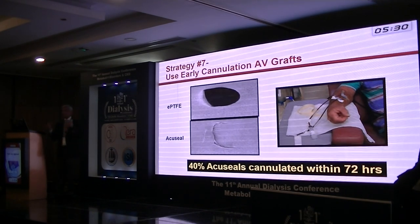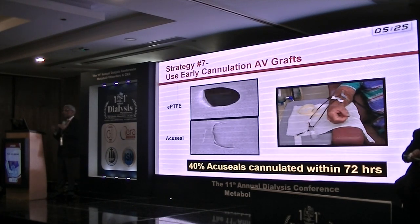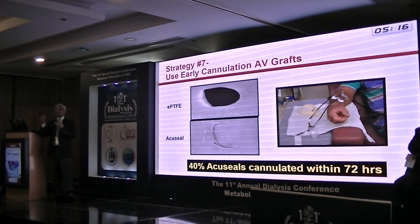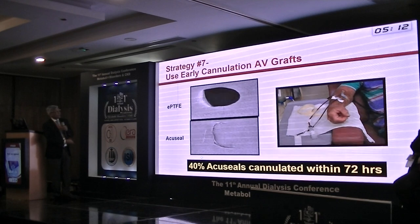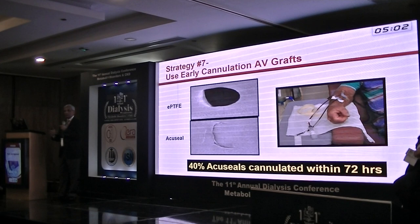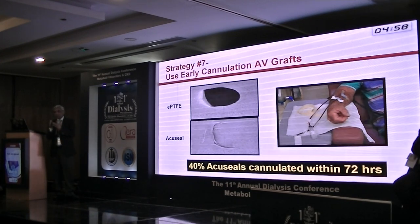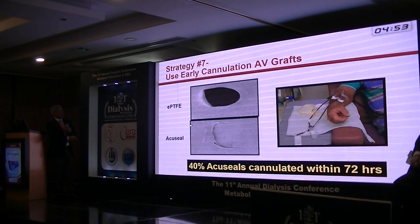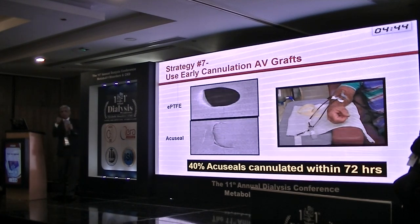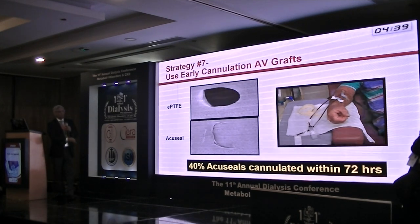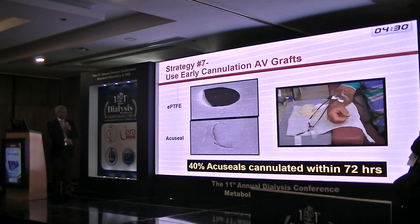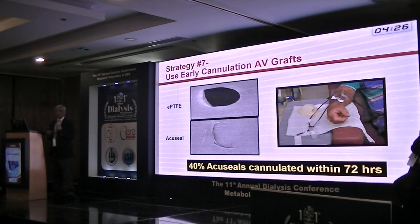Strategy seven: if you do not have time to wait for a fistula — which requires four to six weeks of maturation — you can use a graft, which requires only two weeks. But if you don't even have two weeks, you can use rubberized grafts. Standard PTFE, when needled, leaves a gaping hole and bleeds; you need two weeks of tissue incorporation first. But rubberized grafts — such as Flixene, AccuSeal, and Vectra — self-seal within five seconds of needle removal. These can potentially be used the next day. In one study, 40% of AccuSeal grafts were used within 72 hours.